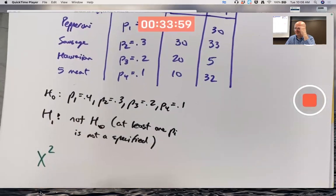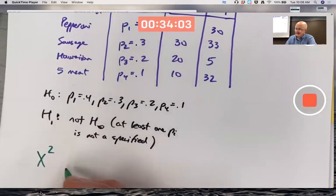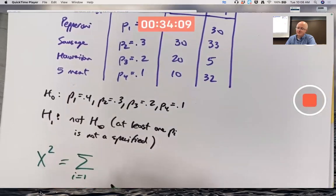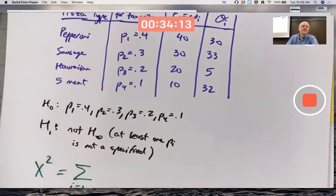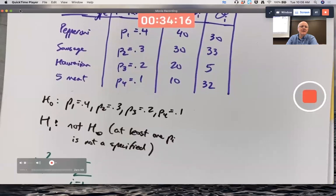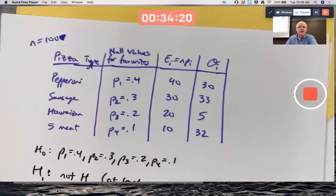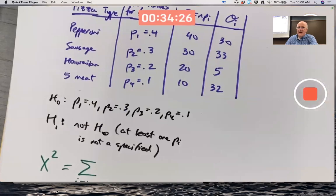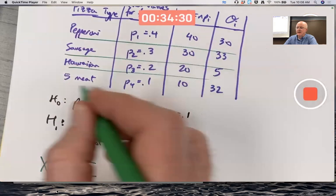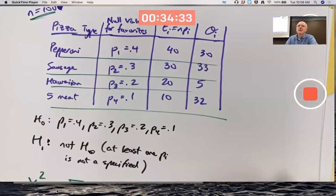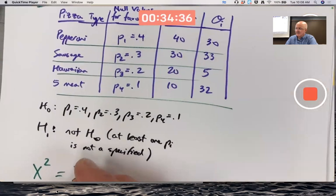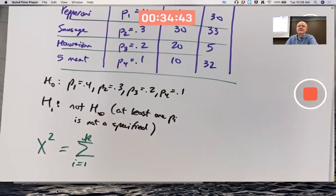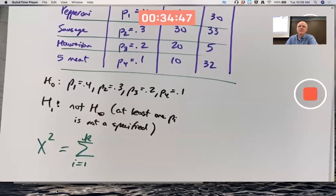So we need a test statistic, and what chapter 15 gets into is the test statistic happens to have a chi-square distribution, so we call it a chi-square test statistic. Chi-square test statistic - that's not an X, that's a chi. Chi-square: summation i goes from 1 to, not n - this is a little tricky with the notation. N is the sample size of the number of people we are surveying, 100 people. But we don't have 100 categories of pizza, we only have four.